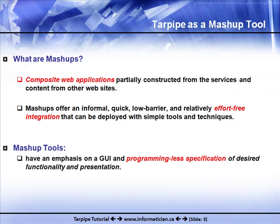If you're considering what a mashup is and haven't heard that term before, here's a quick definition: it's a composite web application that can be constructed from content and services available on other websites already. It's all about effort-free integration using a graphical user interface that does not require any programming effort. There are various tools available online for creating mashups — Tarpipe is one example, and other tools include Yahoo Pipes and Dapper. You can find more information about those tools on my blog.